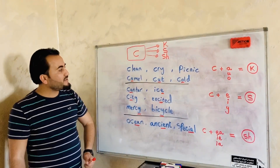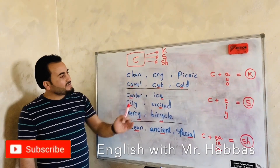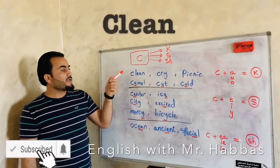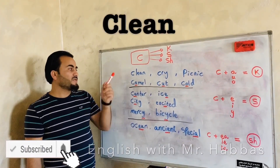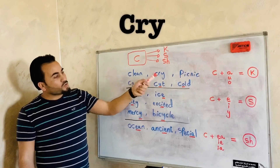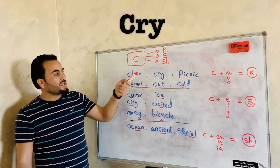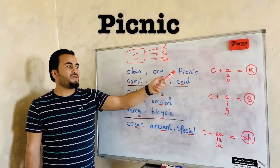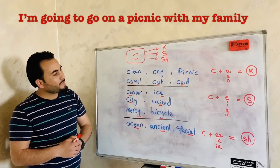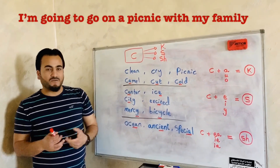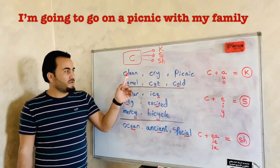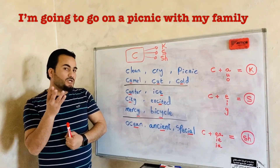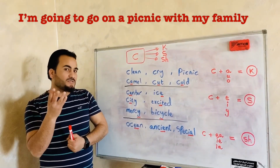Let's get started and see these words. Clean. Cry. Picnic. I'm going on a picnic with my family. Very nice. So here the sound of C is the K sound.